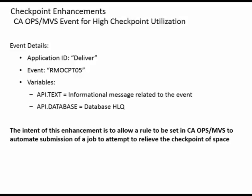As noted previously, we have CA Ops MVS events for high checkpoint utilization. The application ID is Deliver, and the event is RMOCPT05. The variables are API.text, which is the informational message related to the event, and API.database, which is your database high-level qualifier. The intent is to allow a rule to be set in CA Ops MVS to automate the submission of a job to attempt to relieve the checkpoint of space.